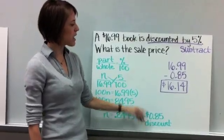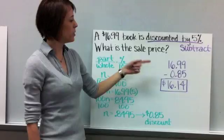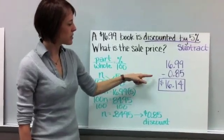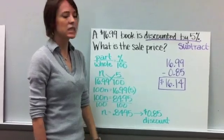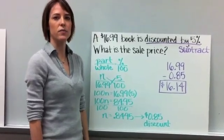And again, remember, discount. So discount, you're going to subtract. So when you take your $16.99, subtract $0.85, you should come up with $16.14 for that book.